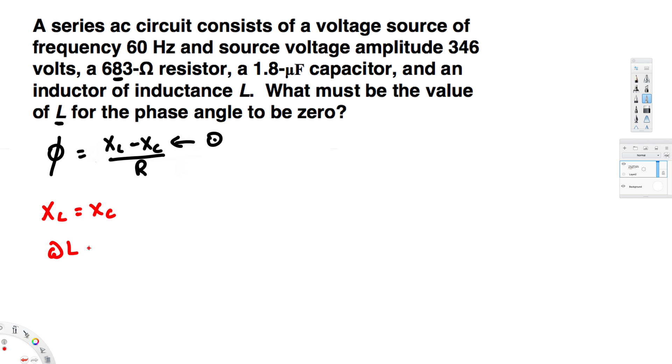Now this XL is given by ωL, and XC is given by 1/(ωC). When these two are equal, we are trying to find the inductance. If we rearrange this equation, that's going to be L = 1/(ω²C).